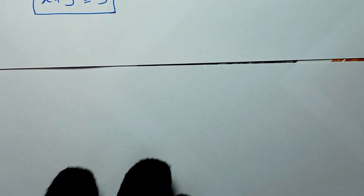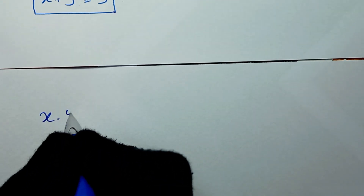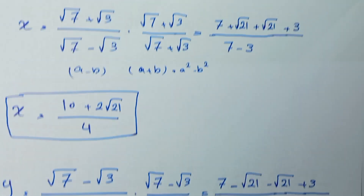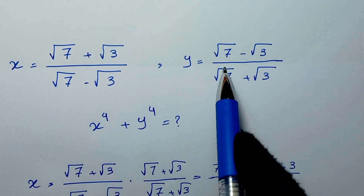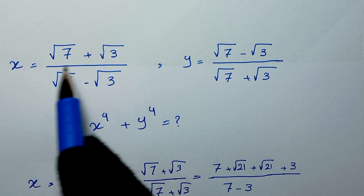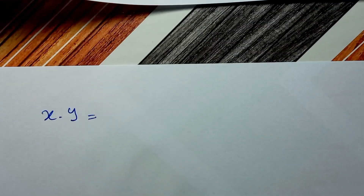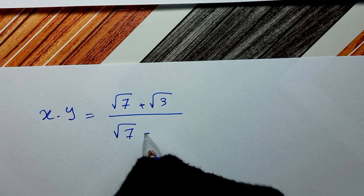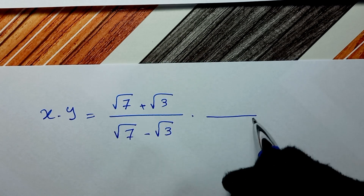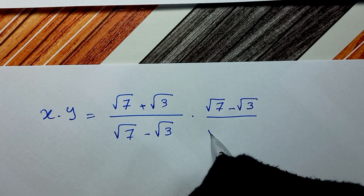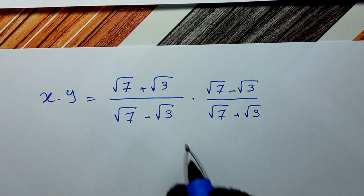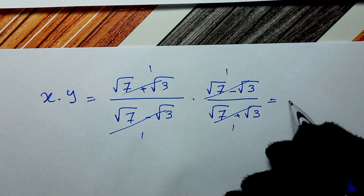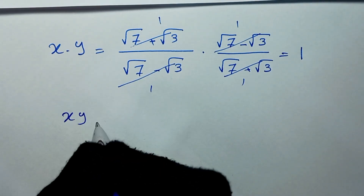In the next step, we multiply x and y. For x times y, it is easier to use the original forms: x is square root of 7 plus square root of 3 over square root of 7 minus square root of 3, and y is square root of 7 minus square root of 3 over square root of 7 plus square root of 3. The numerator and denominator cancel completely, giving x times y equal to 1.